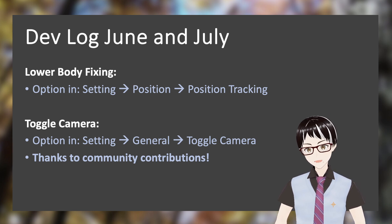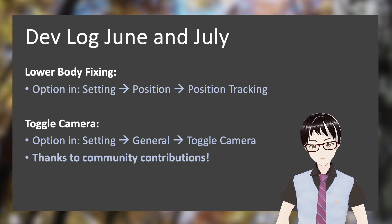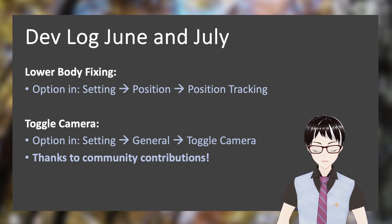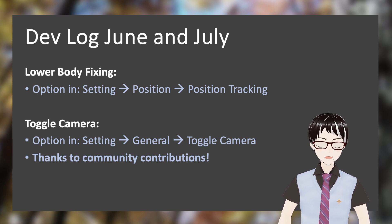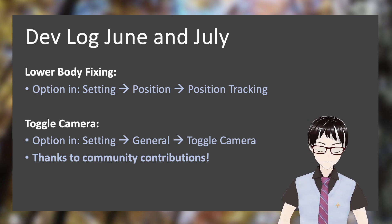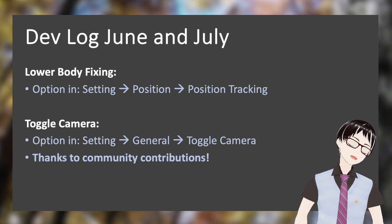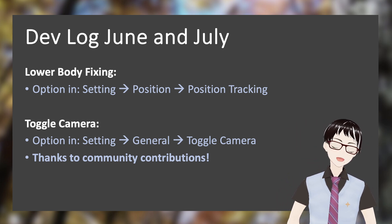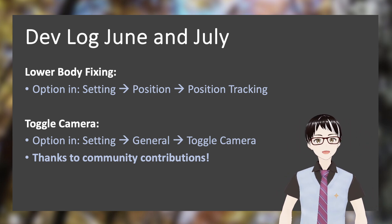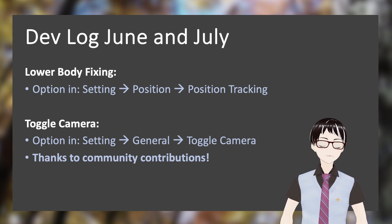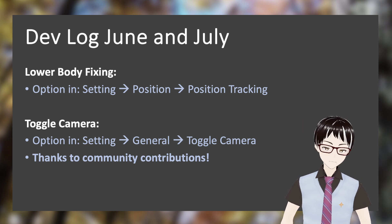The first one is lower body fixing, and the second one is toggle camera. For the first one, if you click into settings, inside position, there's a position tracking button that you can enable or disable. When position tracking is enabled, you will see that our model can move left to right, right to left, up or down, a little to the front, and also back.